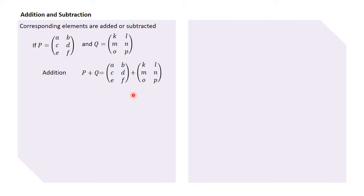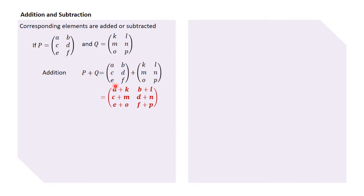By 'corresponding' we mean: if an element is in the first row, first column, we add it with an element in the first row, first column. If an element is in the second row, second column, it's added with another element in the second row, second column — elements that are in the same positions in the two matrices. Therefore P plus Q gives us: a plus k, b plus l, c plus m, d plus n, e plus o, f plus p.